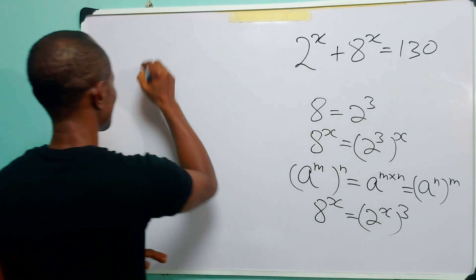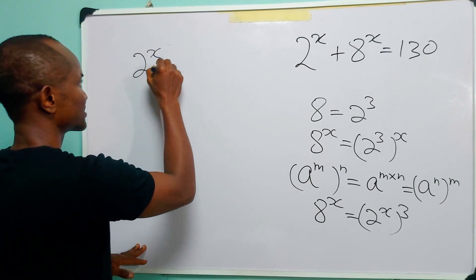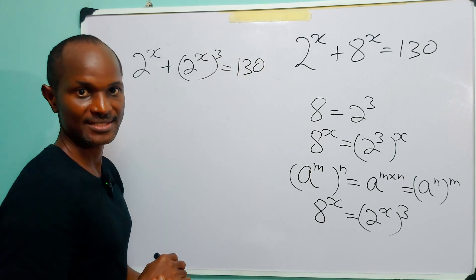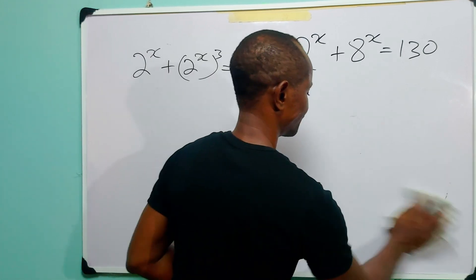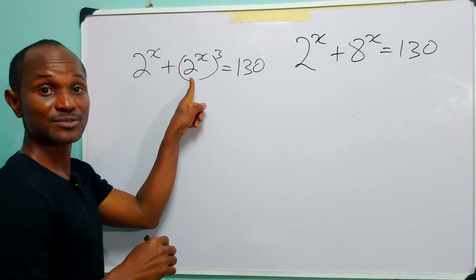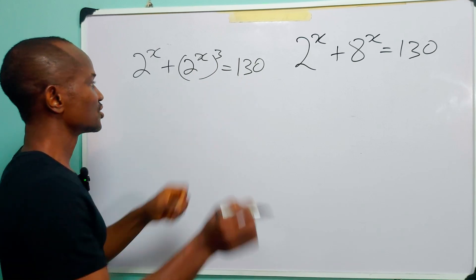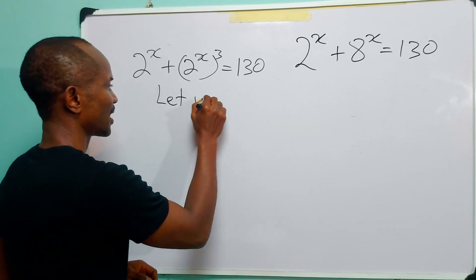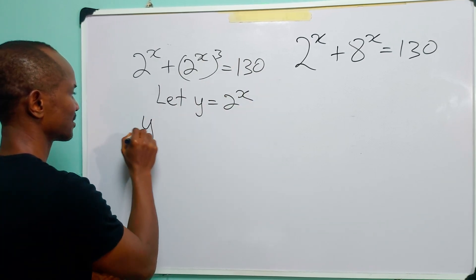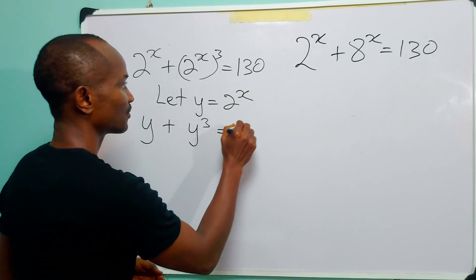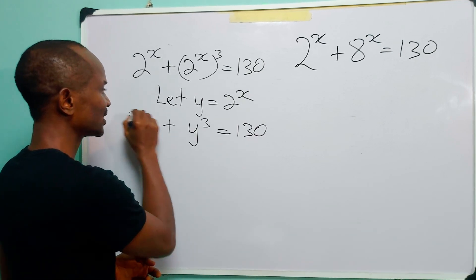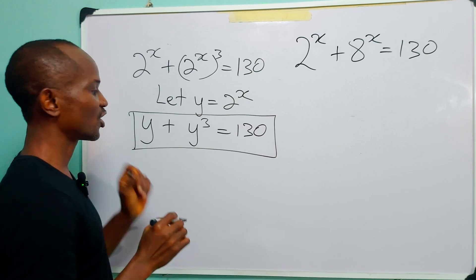With this, the equation now becomes 2 raised to power x plus 2 raised to power x cubed is equal to 130. You can see 2 raised to power x appears twice, and this is a real number. So the next thing to do is let y be equal to 2 raised to power x. Now we can rewrite this equation as y plus y cubed is equal to 130. And this brings us to the second step, which is solving this cubic equation for values of y.